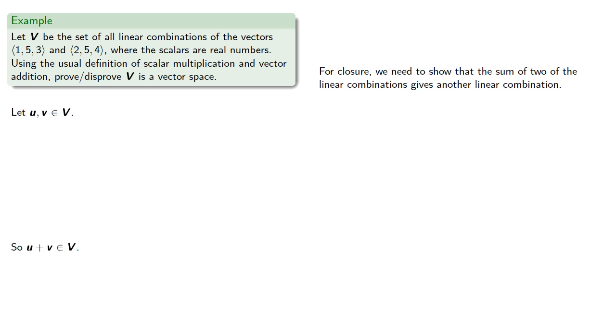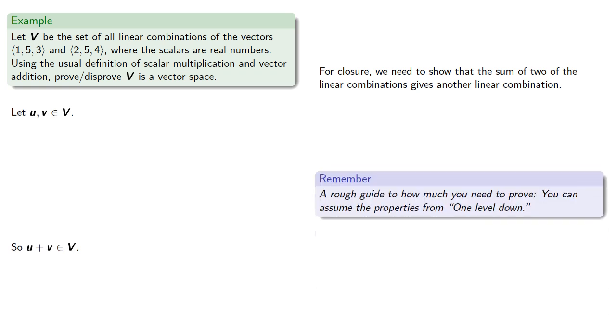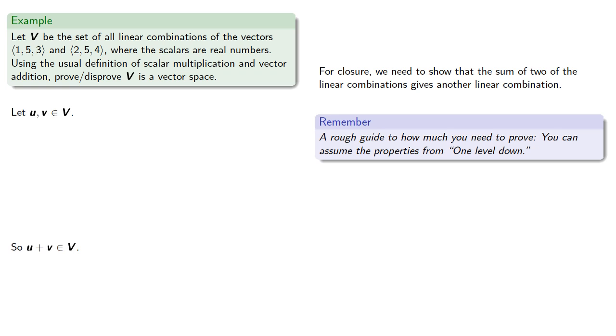So again, a rough guide for how much we need to prove: we can assume the properties from one level down. So remember, u and v are defined as linear combinations of (1, 5, 3) and (2, 5, 4). So u is x₁(1, 5, 3) + x₂(2, 5, 4), and v is y₁(1, 5, 3) + y₂(2, 5, 4).